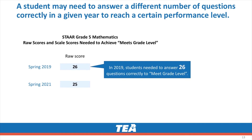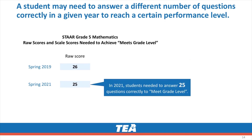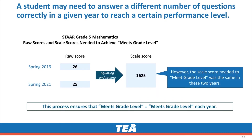In 2019, students needed to answer 26 questions correctly out of 36 total questions to meet grade level. In 2021, students needed to answer 25 questions correctly out of 36 total questions to meet grade level. However, the scale score needed to meet grade level was the same these two years. This process ensures that meets grade level equals meets grade level each year.